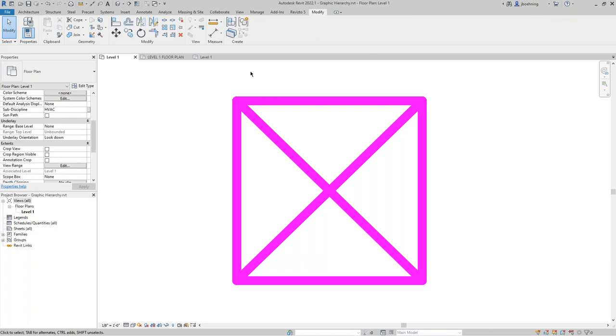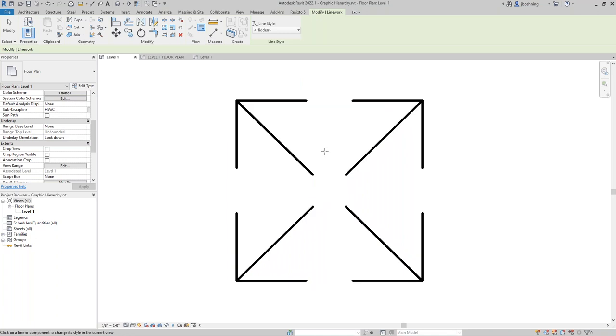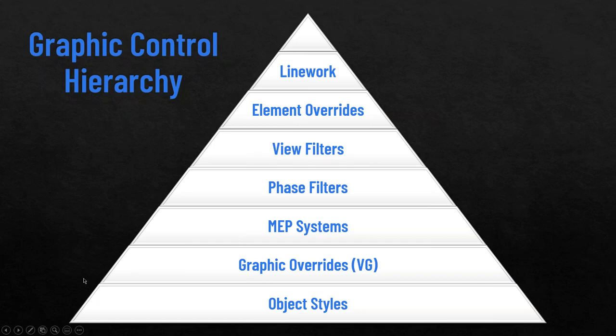Lastly, the linework tool — I recommend you don't use it unless you absolutely have to. Let's take a look: I'll select a hidden line and override it. So we've basically just worked our way up the pyramid to represent the graphic control hierarchy in Revit. In terms of having a plan, start at the bottom and work your way up. Object styles are the most overarching for your project.